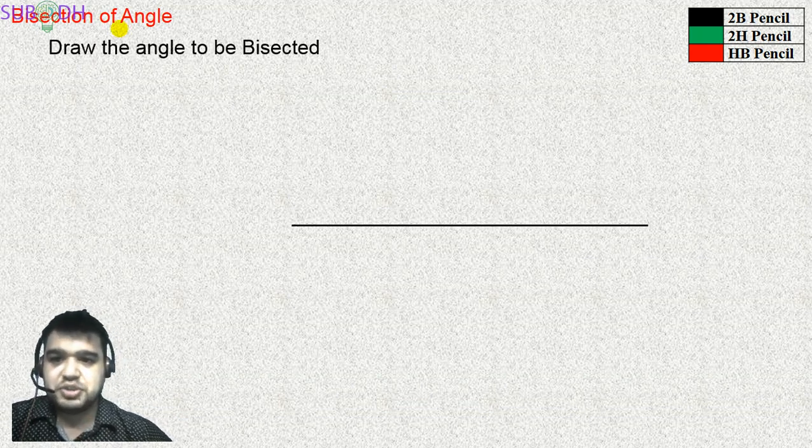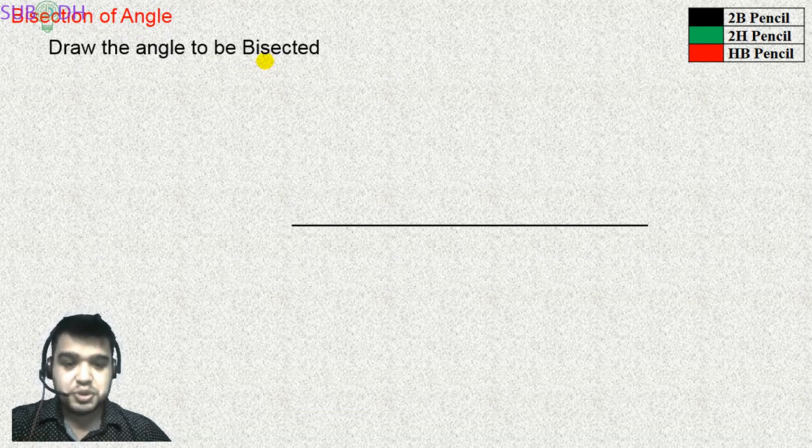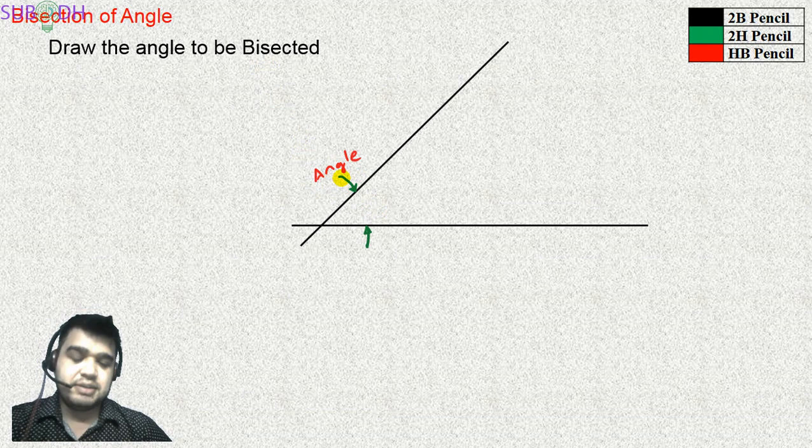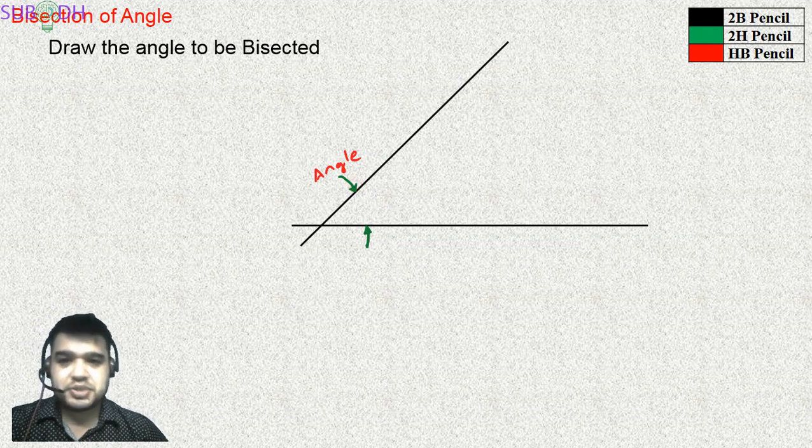Angle bisection: at the beginning, the angle is provided. The angle needs to be bisected. This is the step.